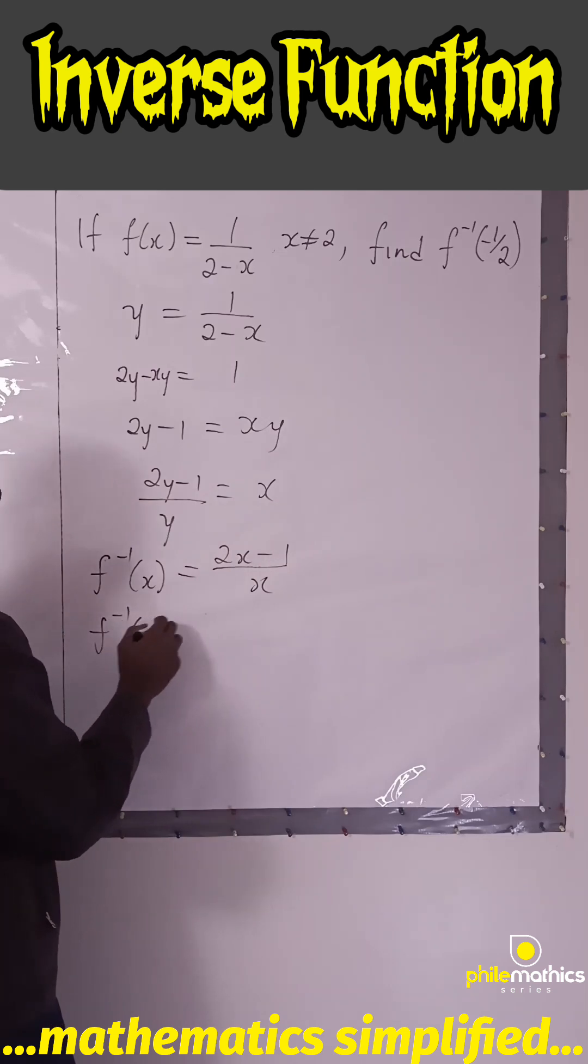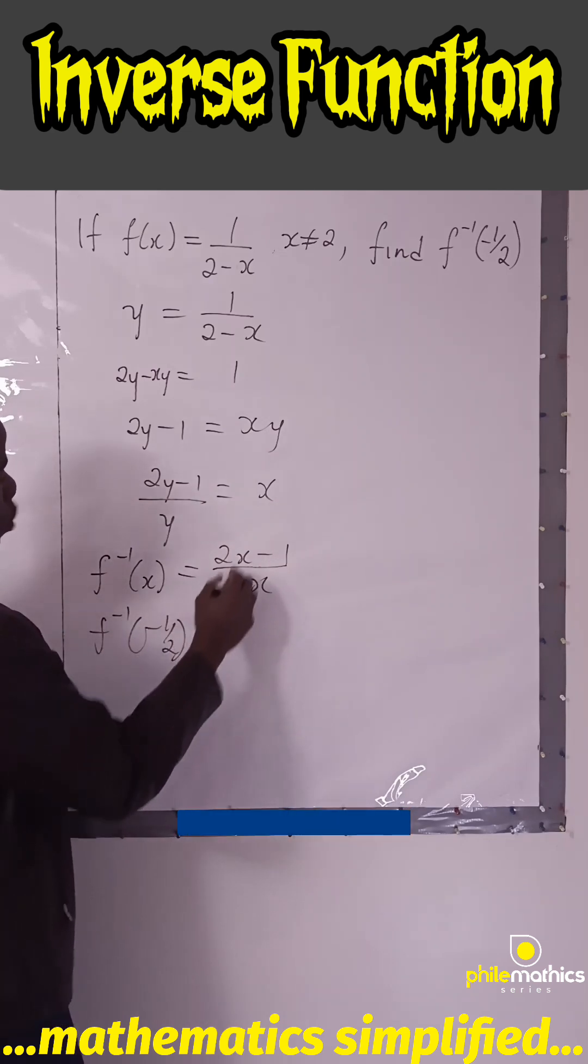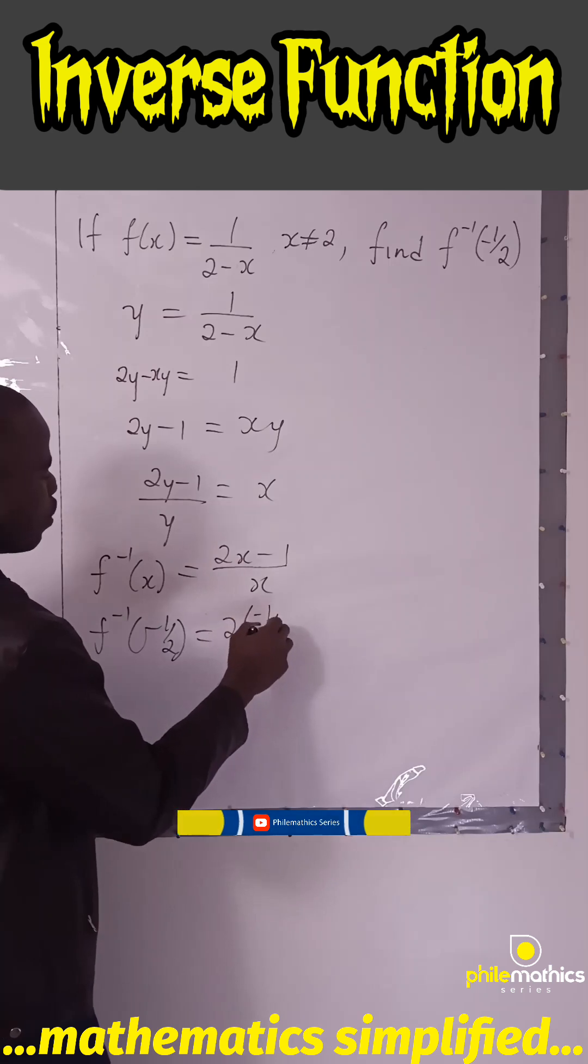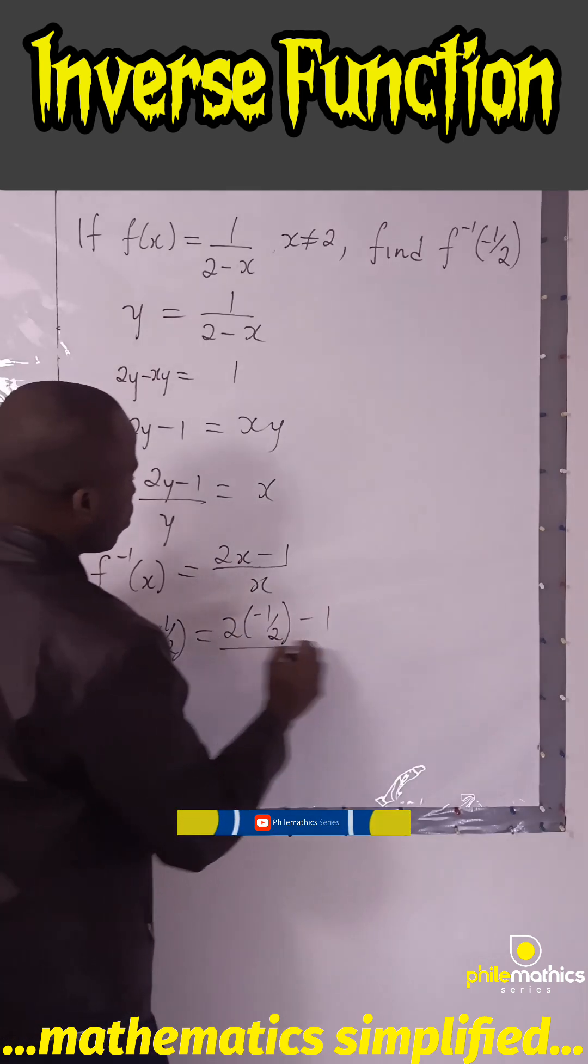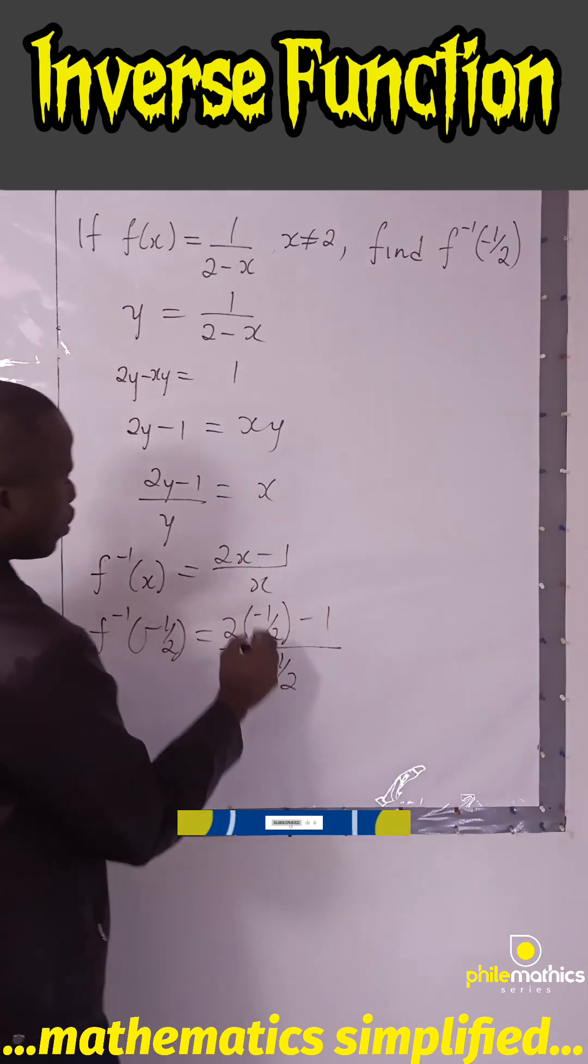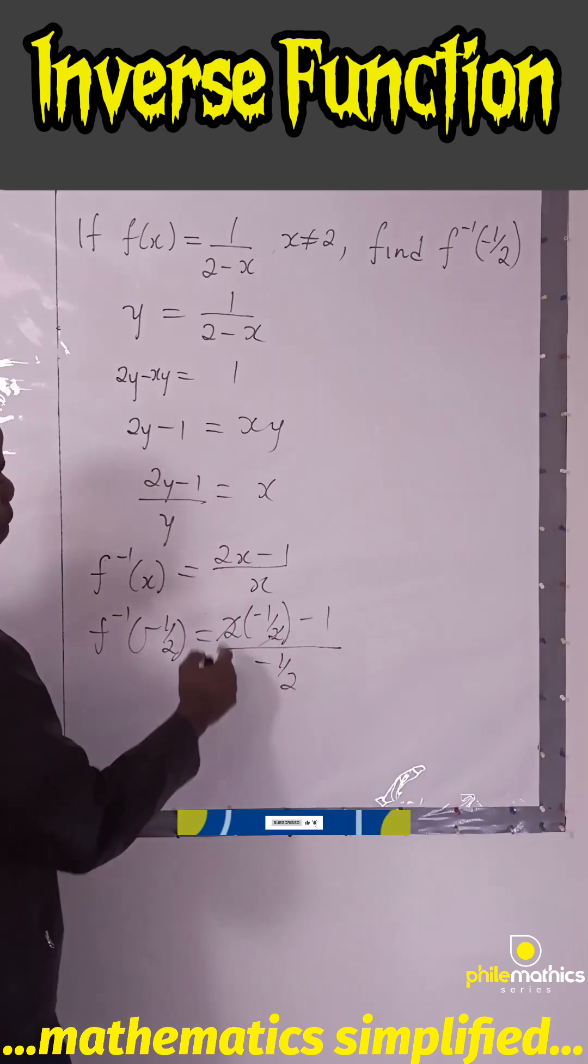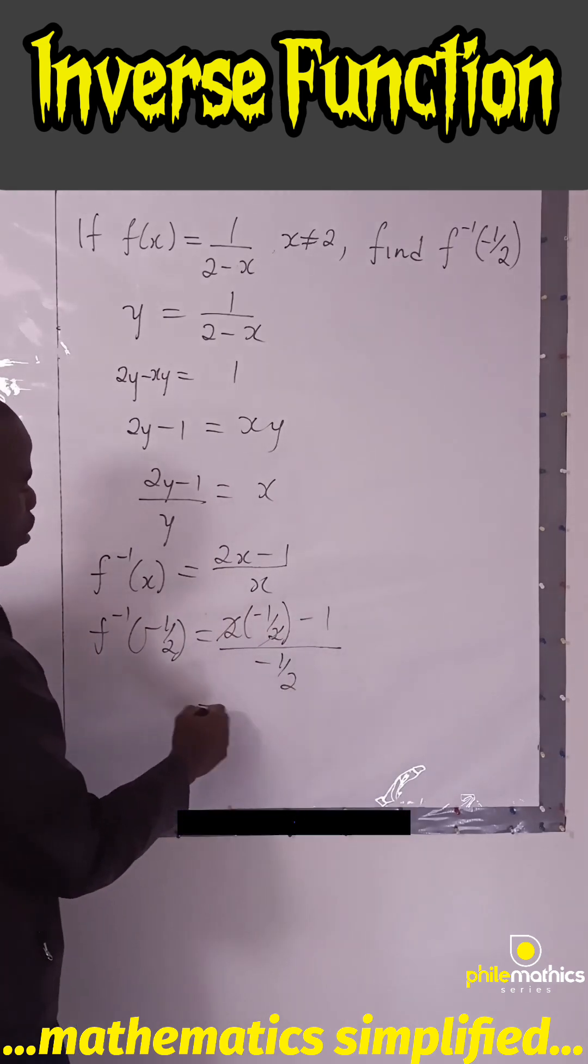Now to find f^(-1)(-1/2), substitute -1/2 for x. You have (2×(-1/2) - 1)/(-1/2), which simplifies to (-1 - 1)/(-1/2) = -2/(-1/2).